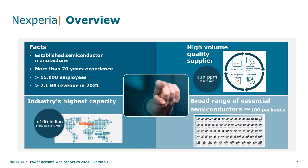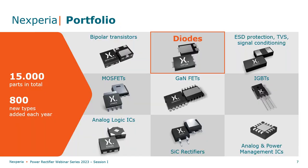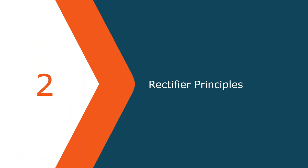A lot of our products go into automotive applications, so highest quality standards are key for us. We have a very broad range of semiconductors — in total more than 100 different packages. Our portfolio includes bipolar transistors, protection devices, MOSFET technology, and analog and logic ICs. In recent years we are stepping up and entering the power area, so we also have GaNFETs, IGBTs, and silicon carbide rectifiers in our portfolio. In total more than 15,000 parts are available and we are extending our portfolio by roughly 800 parts per year.